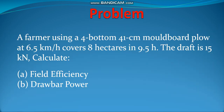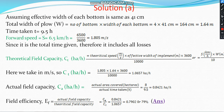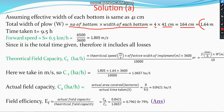First, let's find Field Efficiency. We assume the effective width of each bottom is 41 cm, as given in the problem. So the total width of the plow is the number of bottoms multiplied by the width of each bottom: 4 × 41 cm = 164 cm, or 1.64 m is the width of the plow.